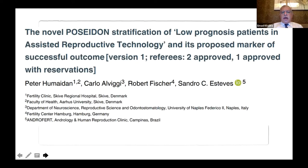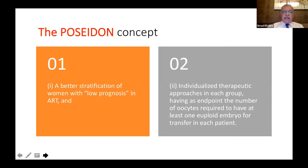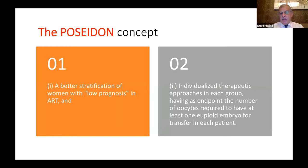The Poseidon stratification for the poor responder provides a better stratification of women with low prognosis in ART. Based on this stratification, you can individualize the therapeutic approach for each group, with the endpoint being the number of oocytes required to obtain at least one euploid embryo for transfer in each patient.